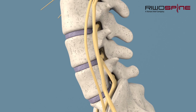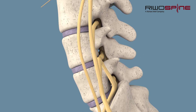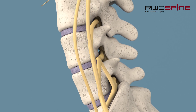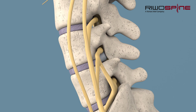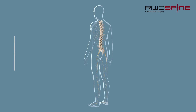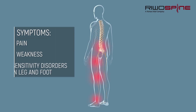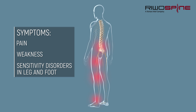One of the most frequent causes of leg and back symptoms is the herniated disc. Here, high forces can cause the outer fibrous ring to rupture and the fibers and core material to exit into the spinal canal. Depending on the anatomical structures and location of the herniated disc, the symptoms can be very different. It is possible that disc tissue compresses important neural structures causing pain, sensitivity disorders, and limited mobility.